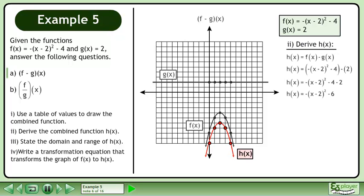Replace f with -(x-2)² - 4 and replace g with 2. Simplify to get h(x) = -(x-2)² - 6.